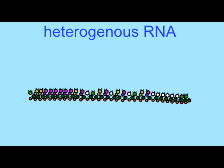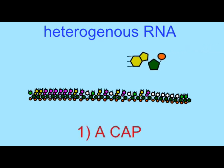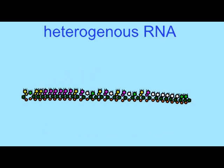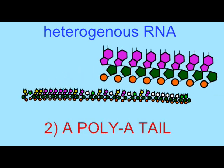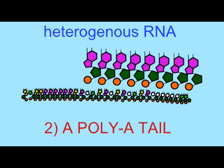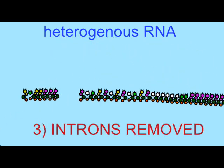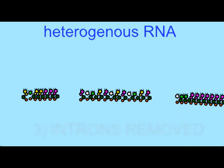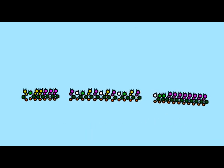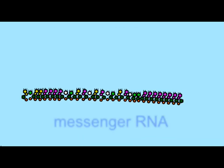After most genes are transcribed, the introns are excised and removed, and the remaining exons are spliced together, and this mRNA will then undergo translation to produce the protein product.